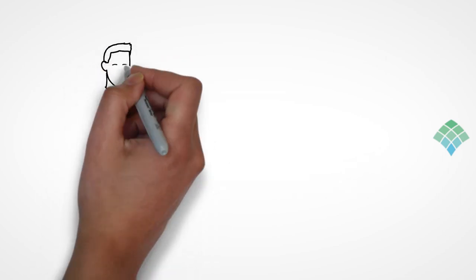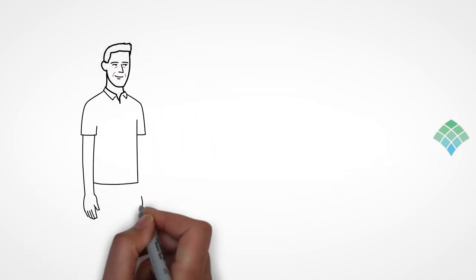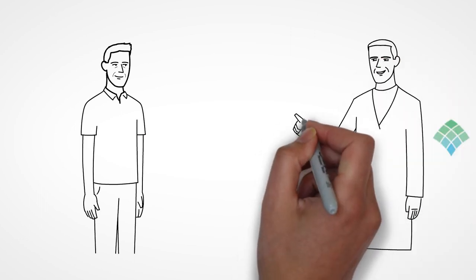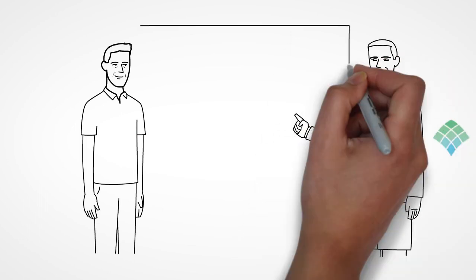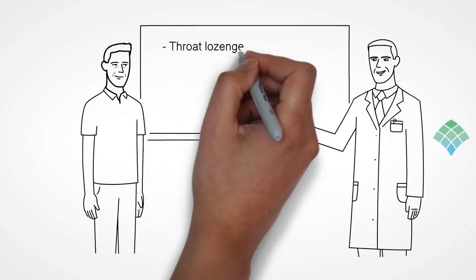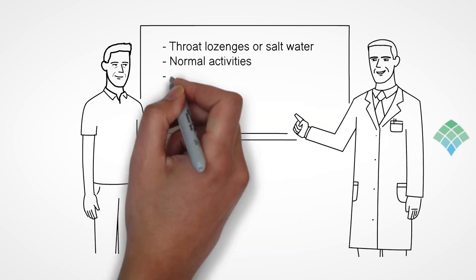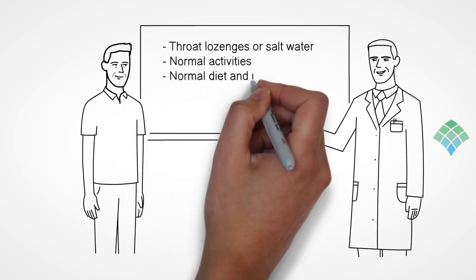Following this test, some patients experience soreness in the nose and throat. Throat lozenges or salt water gargles may be used to relieve any discomfort. You may resume normal daily activities, diet, and medications immediately following a manometry. Driving is permitted since no sedating medications were involved.